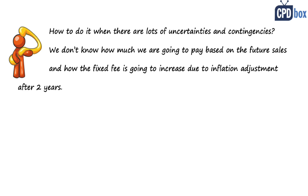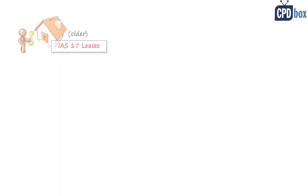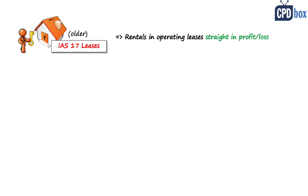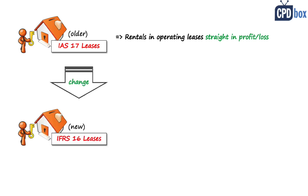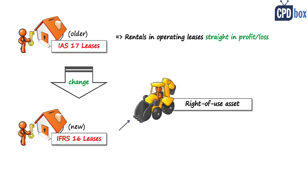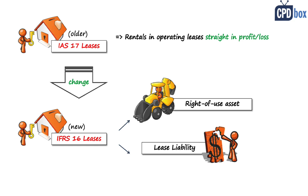This is a very good question, because IFRS 16 brings a few complications to lessees with so-called operating leases. Under the old standard IAS 17, you simply accounted for operating leases straight in profit or loss as an expense. But that dramatically changed with IFRS 16 — now you need to recognize a right-of-use asset and a lease liability equal to the present value of the unpaid lease payments.